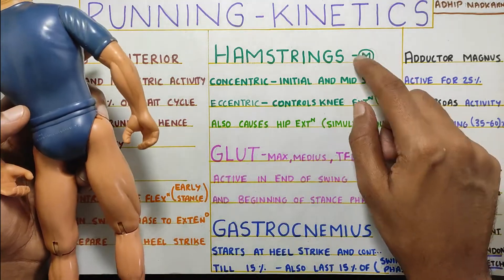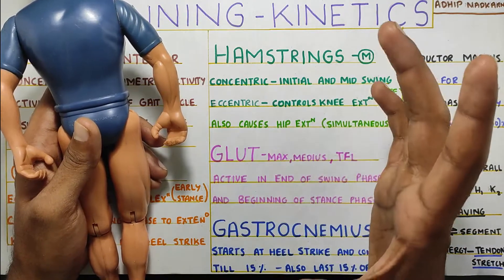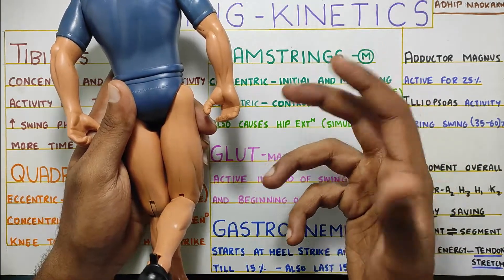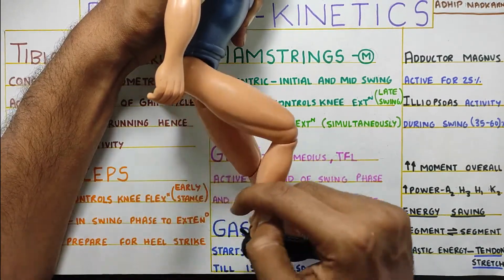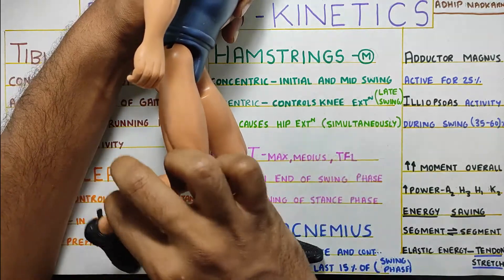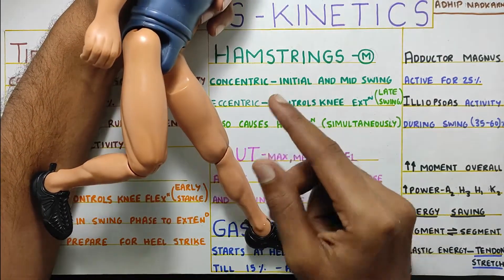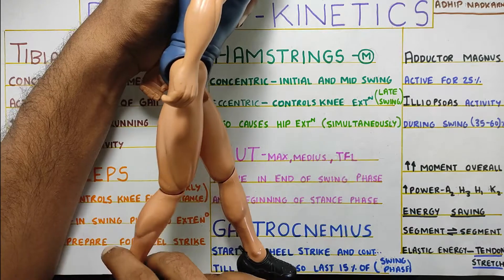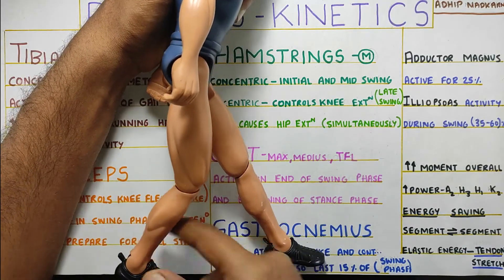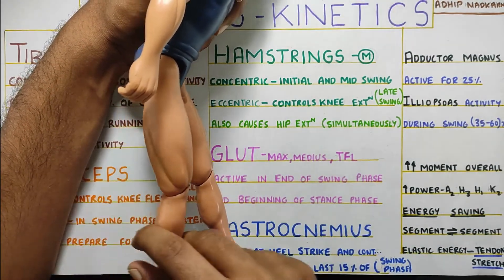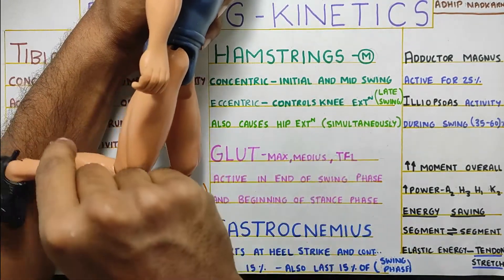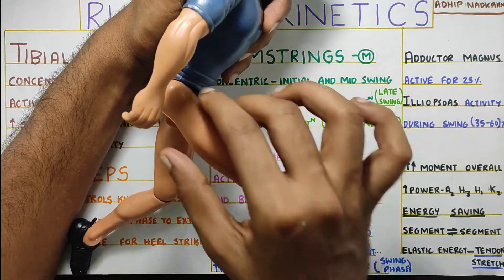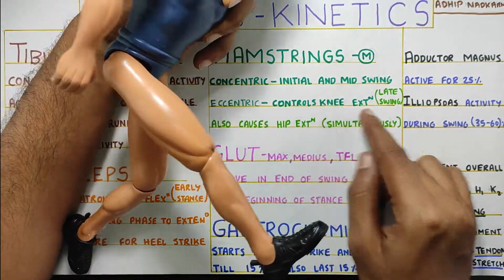Next, going a little bit down, there is the hamstring — specially the medial part. First, the concentric contraction where the muscle shortens: if the hamstring shortens, it will create knee flexion. Knee flexion happens during your swing phase because you have to clear your foot off the ground. So during mid swing and initial swing, your hamstrings will concentrically contract and bring your knee to flexion. Whereas the eccentric activity of the hamstring — where the hamstring is lengthening — controls knee extension. Gravity pulls the knee down and the hamstrings allow the knee to go into extension. This happens in the late part of the swing so that you can put the foot on the ground.